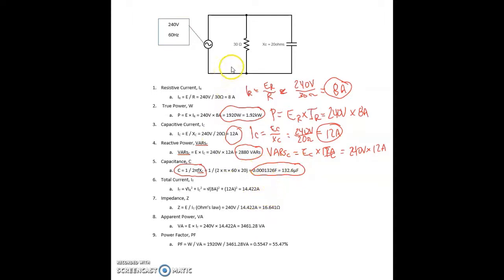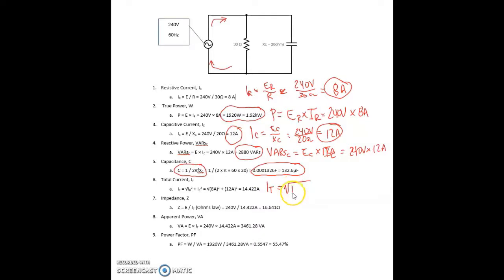For the total current — the current flowing into and out of the parallel branches — it equals the current through the resistor and capacitor combined. However, we cannot simply add those up because they are out of phase with each other. So total current equals the square root of the resistor current squared plus the capacitor current squared, equals the square root of 8 squared plus 12 squared, and that gives 14.4 amps.